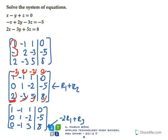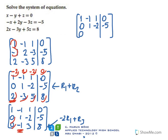In the next step, if I add row two to row three, I will get a zero here. So it will be zero plus zero is zero; one minus one is zero; minus two plus three gives us one; and minus five plus eight gives three. What we do here is row two plus row three.